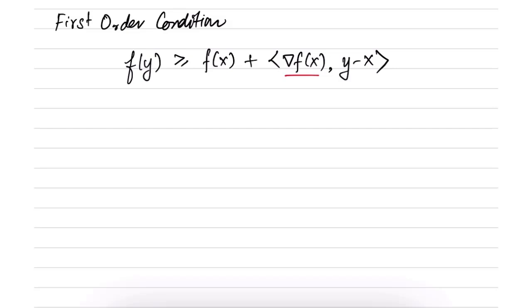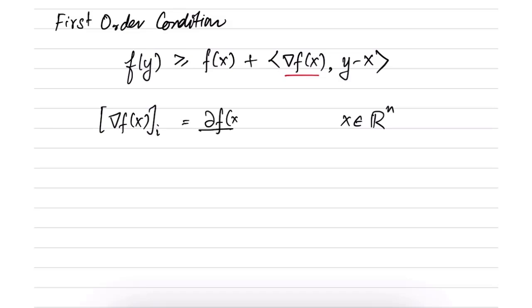Note that the gradient of f, when x is a vector in R^n, has its i-th entry equal to the partial derivative of f with respect to x_i.